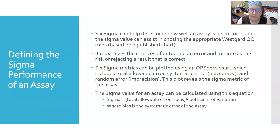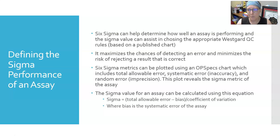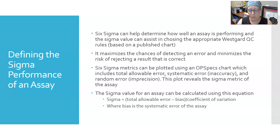Six sigma can help determine how well an assay is performing. The sigma value can assist in choosing the appropriate Westgard QC rules to help flag when problems are developing — based on published charts you can look up. This maximizes the chances of detecting an error and minimizes the risk of rejecting a correct result. Six sigma metrics can be plotted using an OP specs chart, which includes total allowable error, systematic error (inaccuracy), and random error (imprecision). This plot reveals the sigma metric of the assay, ranging from one to six sigma, and determines which Westgard QC rules to use. The sigma value of an assay is calculated as: sigma = (total allowable error − bias) / coefficient of variation, where bias is the systematic error of the assay.